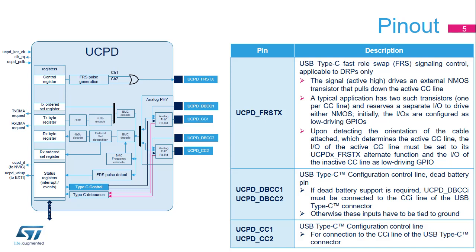The UCPD FRSTX pin is relevant when the dual-role port protocol is supported. It is used to control an external NMOS transistor that pulls down the CC1 or CC2 line respectively, which is the way to request a role swap. Pins UCPD DBCC1 and UCPD DBCC2 are used when the STM32L5 USB Type-C port indicates to the peer port a dead battery condition.